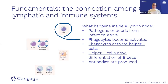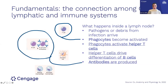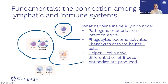One of the things helper T cells do, when activated within a lymph node, is drive the differentiation of B cells. B cells go from being inactivated to suddenly being able to produce antibodies. B cells can do other things, but we're going to focus on this antibody response.